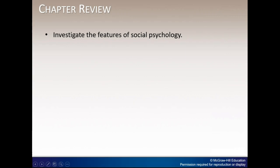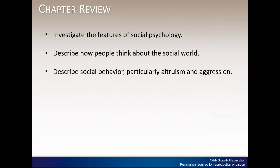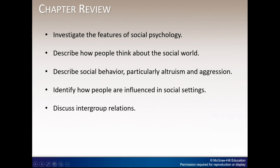In review of the chapter, we looked at the investigation of the features of social psychology. You should be able to describe how people think about the social world, describe social behavior — particularly altruism and aggression — identify how people are influenced in social settings, discuss intergroup relations, explain the nature of close relationships, and describe social processes affecting health and wellness.